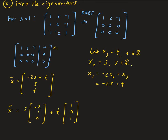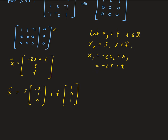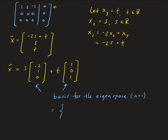The basis for the eigenspace for lambda equals 1 consists of these two vectors. We'll call them V1 = (negative 2, 1, 0) and V2 = (1, 0, 1). These will be part of our P matrix. Now let's find the eigenvector corresponding to lambda equals 5.